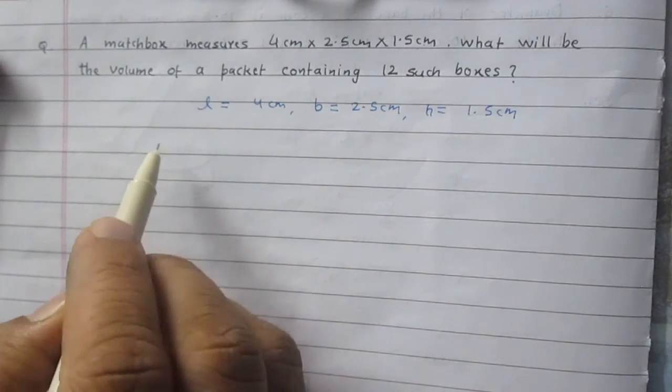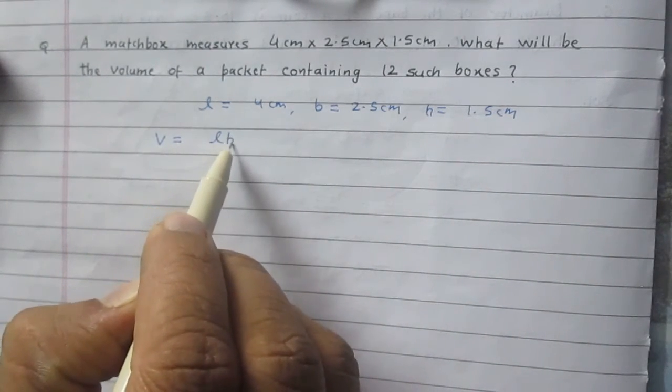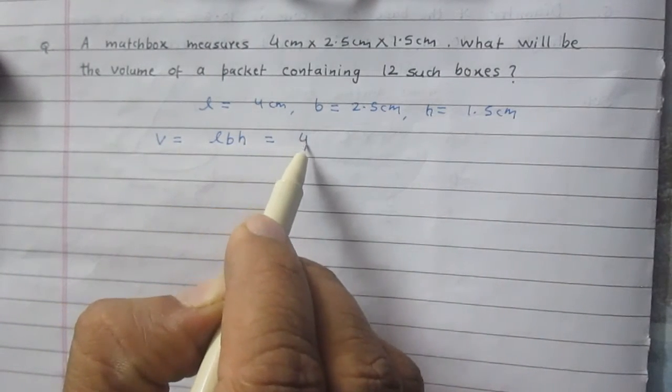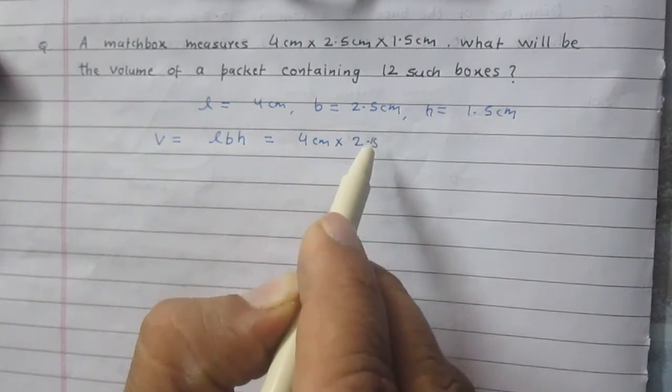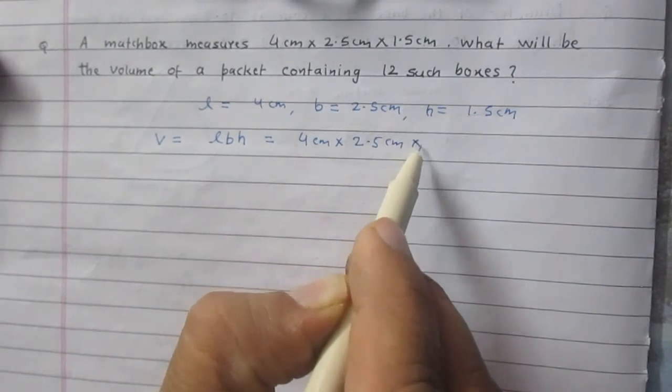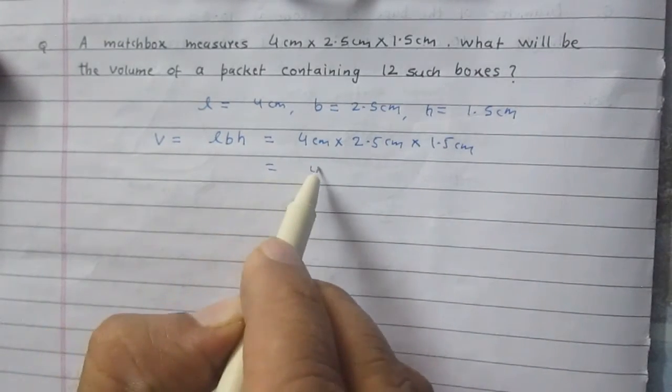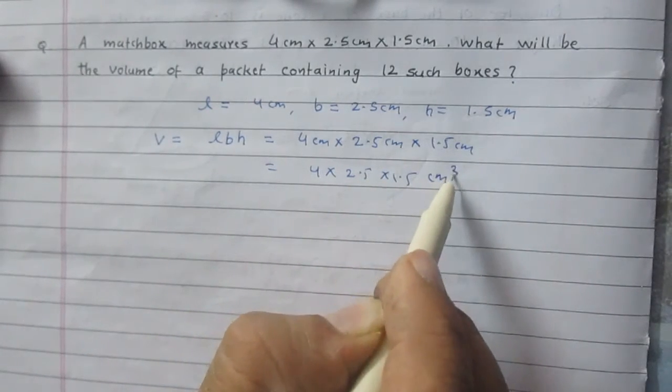We know that the volume of a cuboid is length into breadth into height. So volume of this matchbox is 4 cm multiplied by 2.5 cm then multiplied by 1.5 cm. So it is 4 into 2.5 into 1.5 cm cube.